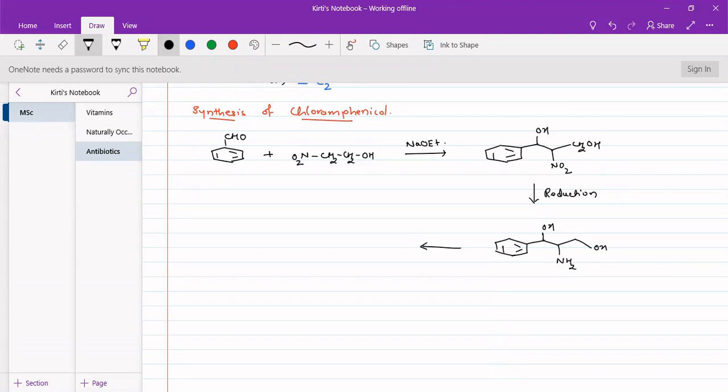First, we will protect these groups. These groups will protect both hydroxyl groups and NH2. Then we can react it with HNO3, that is nitrating mixture, so we will get a nitro group.